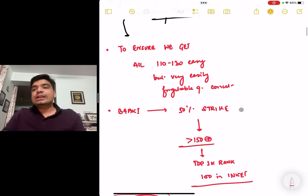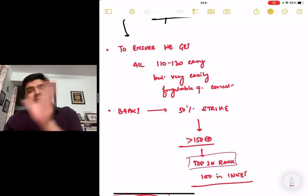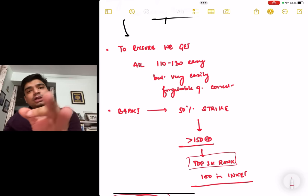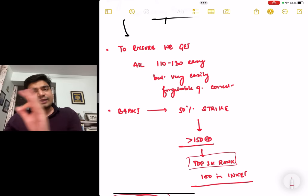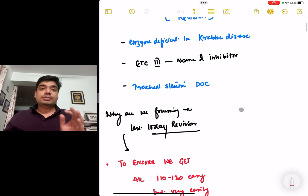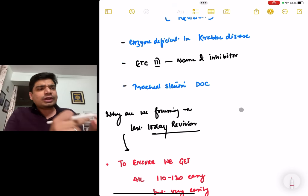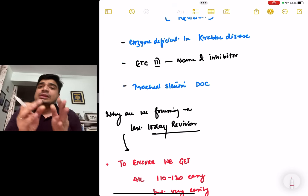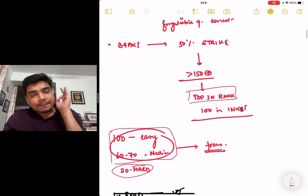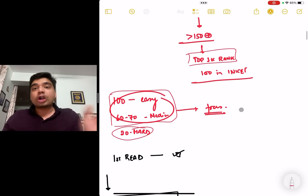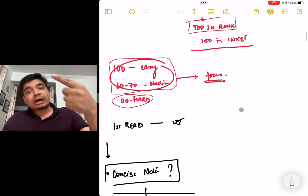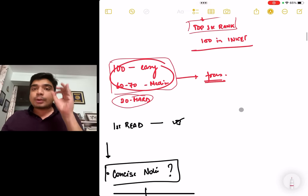For the rest, even if you have 50-40% strike rate, you still will be able to score 140-150 plus correct answers. That will definitely guarantee you a top 1K rank as far as NEET is concerned. If you get 140-145-150 correct answers for INI-CT, you will get a top 100 rank. So this is why the last 10-day revision is important, so that everything is on the surface of your memory.